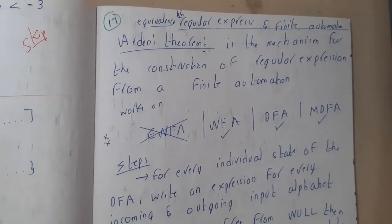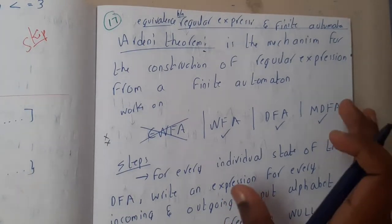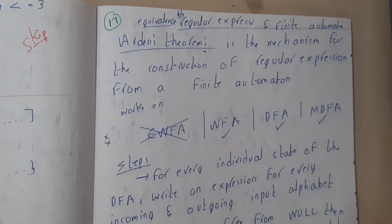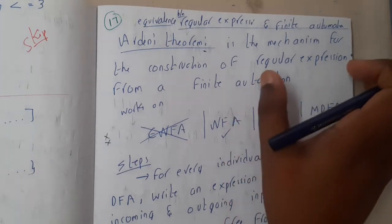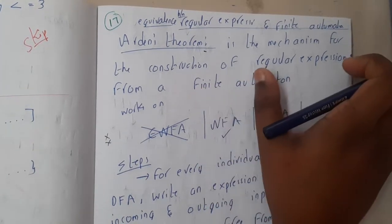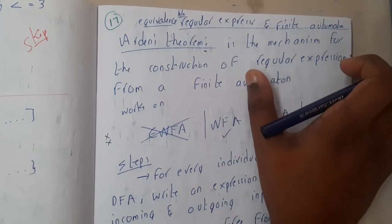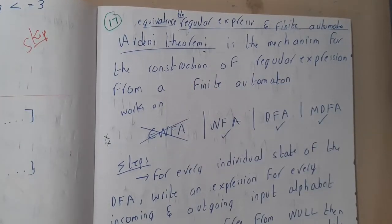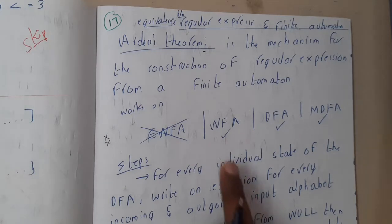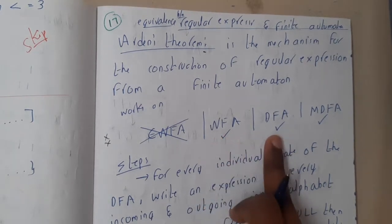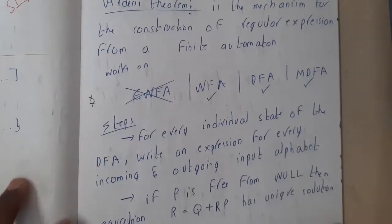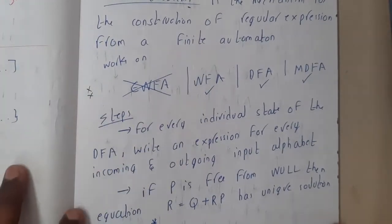Arden's theorem states that for any kind of finite automata, we can find a regular expression, and for any regular expression, we can draw a finite automata. It can be applied for NFA, DFA, and minimized DFA. The most important thing is it does not accept epsilon-NFA.